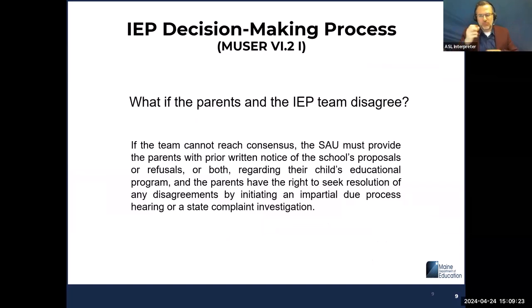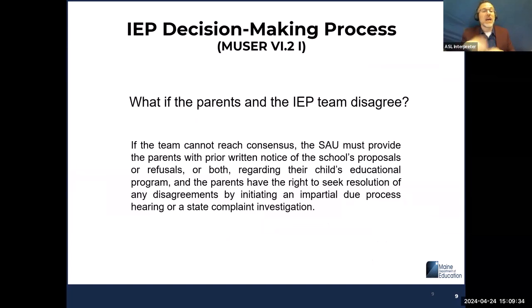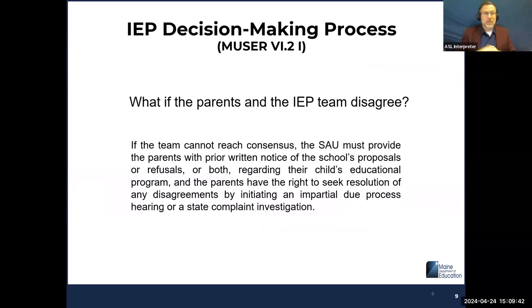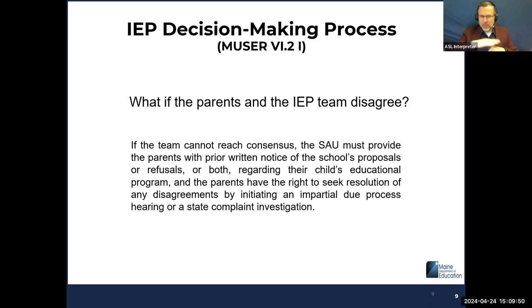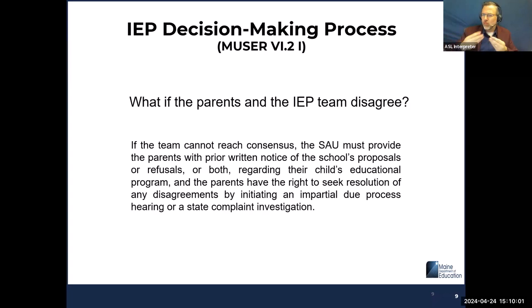I'm a big 'what if' person, so that led me to: what if the parents and the IEP team disagree on decisions during the IEP meeting? If the team cannot reach consensus, the SAU must provide the parents with prior written notice of the school's proposals or refusals — or both — regarding their child's education program. The parents would then have the right to seek resolution of any disagreements through due process hearings or state complaint investigations.